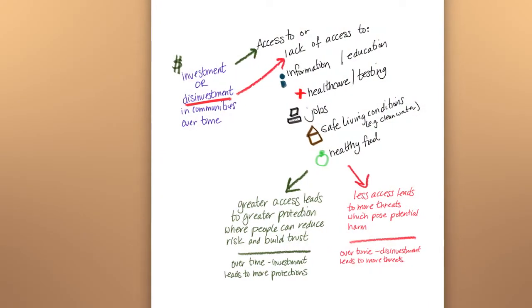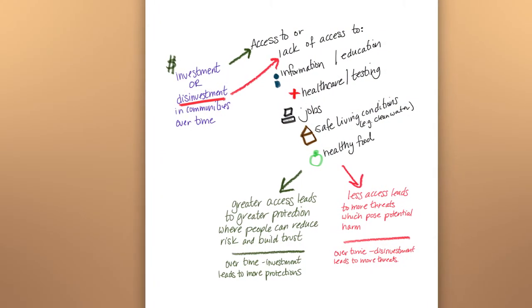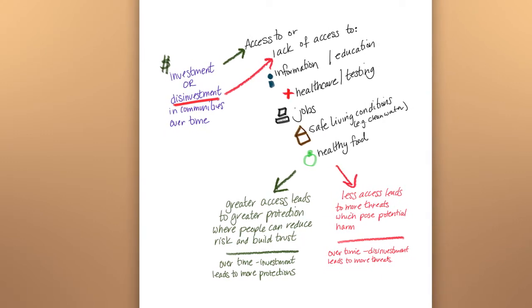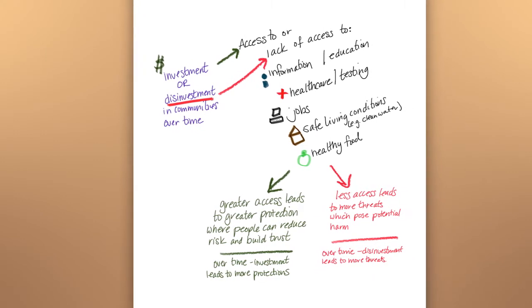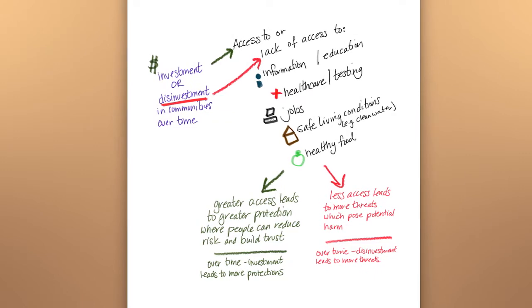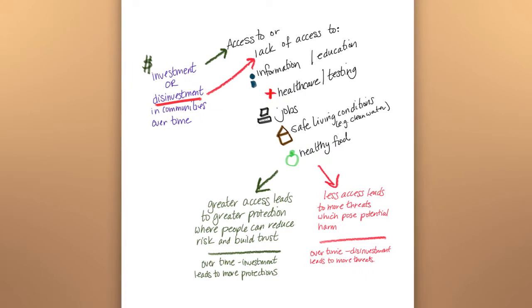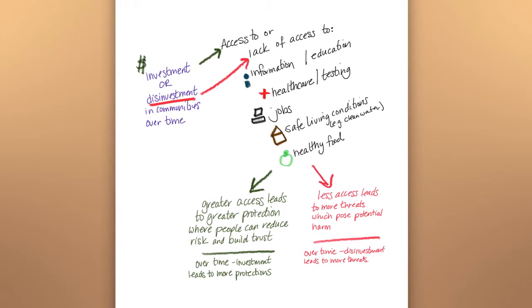Students then make sense of what that data can tell us about both the threats and protections a community might experience during a crisis like the COVID-19 pandemic. We figure out how these factors we've been thinking about throughout the unit can act as threats or protections as people experience events that cause them to need to take risks, like going to work during a pandemic.